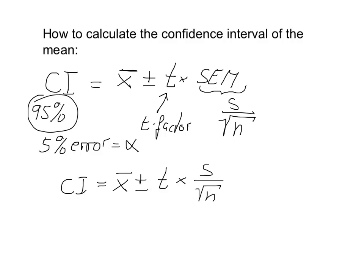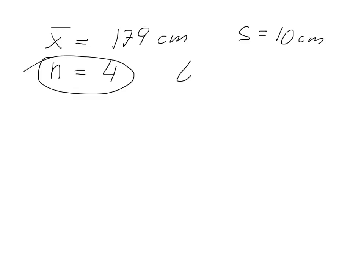So let's say we have a mean of 179 cm, we have a standard deviation of 10 cm, and we had a very small sample, our observations was very limited, we only picked four students, so we have four here. Now for a number of four, this t value, this t factor is given as 3.18.